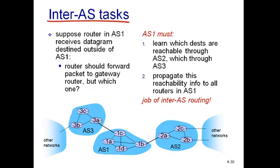For example, if router 1A has a packet destined to an address not residing in this autonomous system, how does it decide which gateway router to forward it to? This particular autonomous system has two gateway routers — 1C and 1B — which are connected with other autonomous systems. This decision is made with the help of the inter-domain routing algorithm.